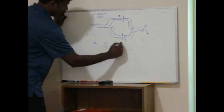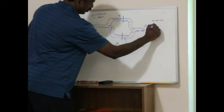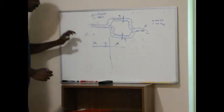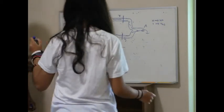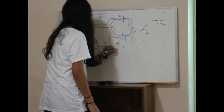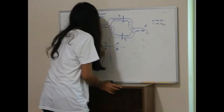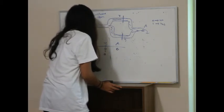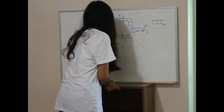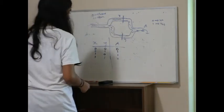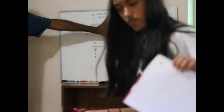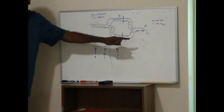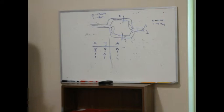Zero is closed, one is open. A: zero means no water, one means yes. Now, if both are closed, there's no water. But if any one of them is open, there will be water. So what's this gate called? We call the first one an AND gate — this one is an OR gate.